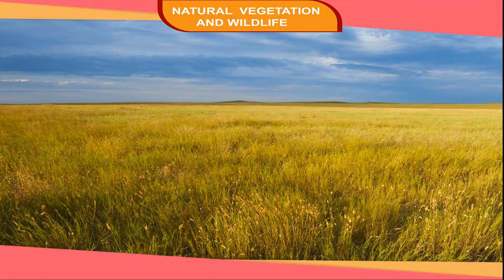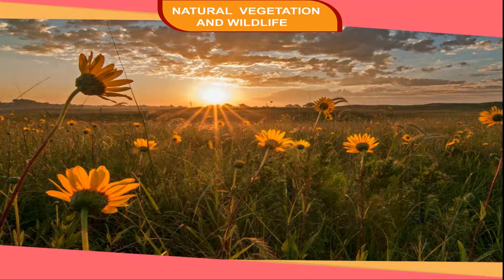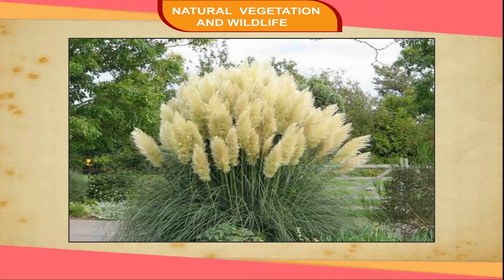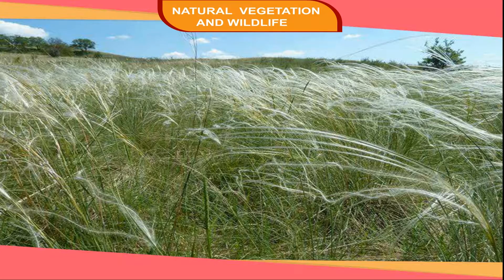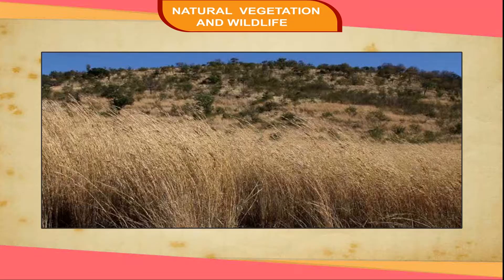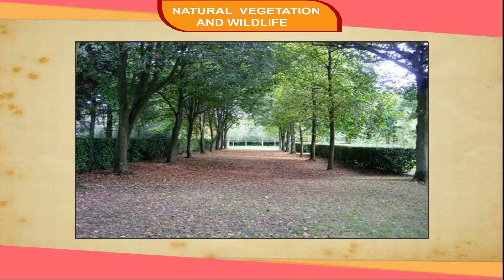Temperate Grasslands. Grasslands are found in the temperate region also, mostly in the interiors of continents. In most continents they have specific names, such as prairies in North America, pampas in South America, steppes in Central Europe, velds in South Africa, and downs in Australia. Wheat and grains are grown on large farms in these regions. As these grasslands are colder and drier, the grasses are shorter and less dense than those of the tropical grasslands. Trees are almost absent.